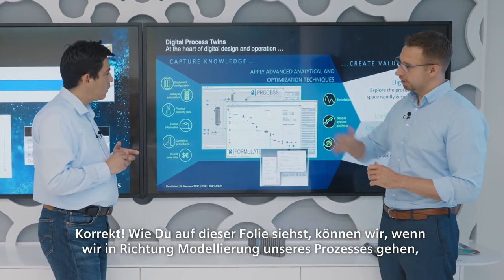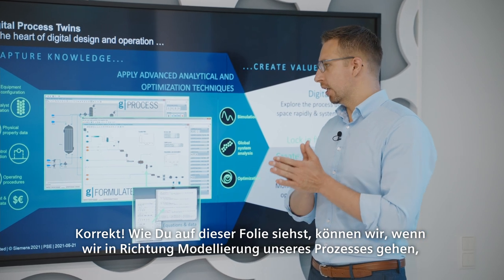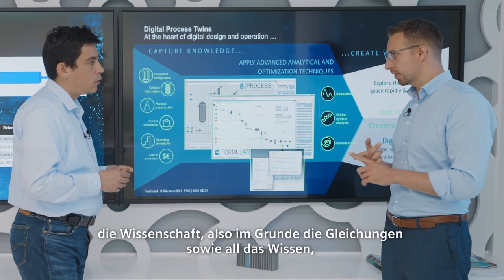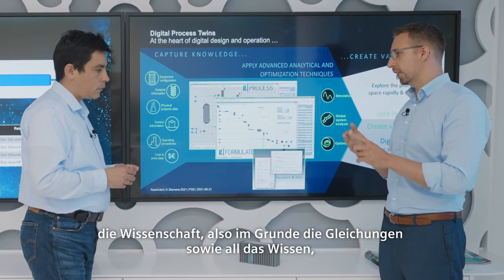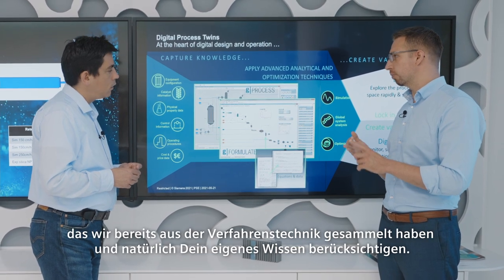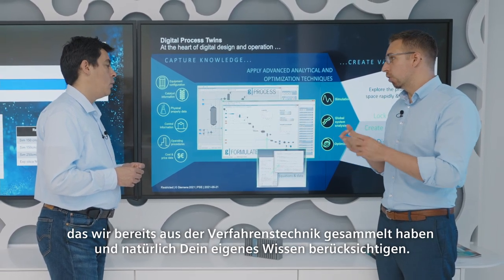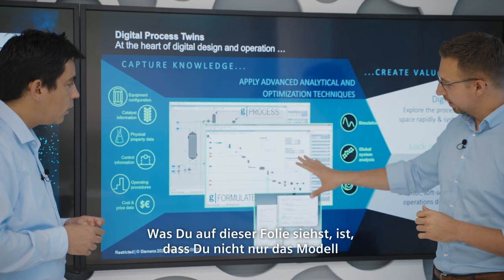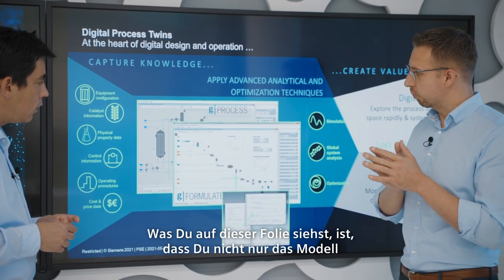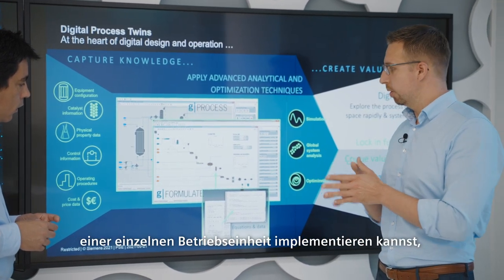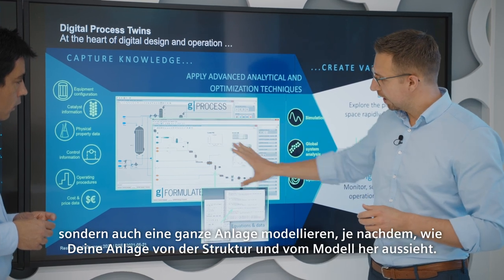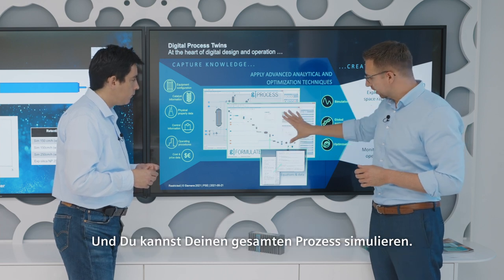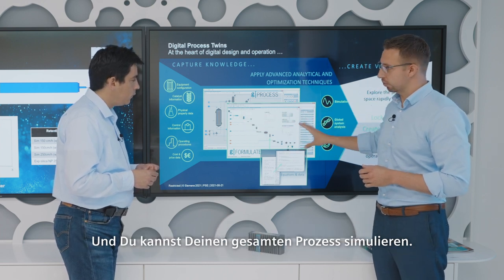As you see on this slide, when we go into the direction of modelling our process, we can take into account the science — the equations of the process itself. We can also incorporate all the knowledge gathered from process engineering. You can implement the model of a single unit operation, but you can also model an entire plant and simulate your entire process.